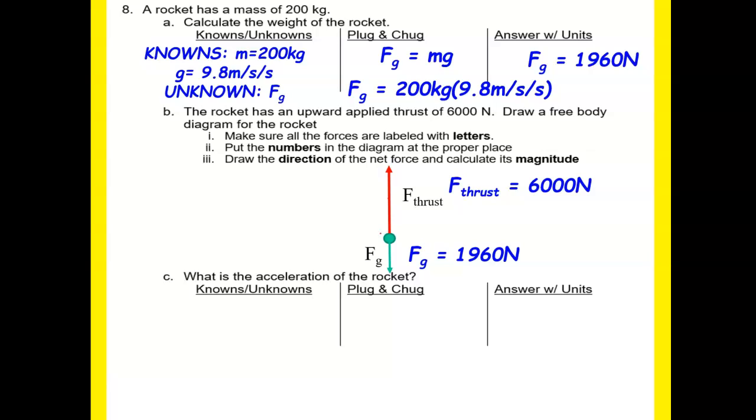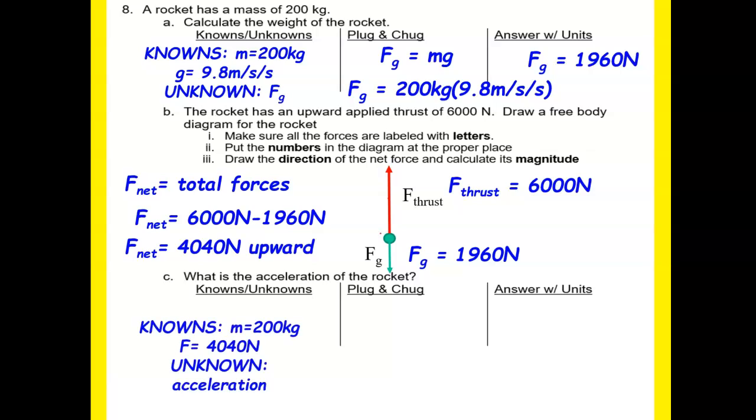Now, the question is asking us, what is the acceleration of the rocket? So if I know my total forces, which is what net force is, in the direction of how we have our picture, we know that it's going to be 6,000 newtons minus 1960 newtons, because we have our opposite direction of our forces, so we're going to subtract. So therefore, the net force is upward direction, which is 4040 newtons upward, because 6,000 is bigger. So therefore, we know that our net force is 4040 newtons.